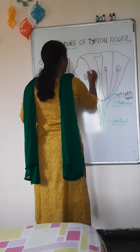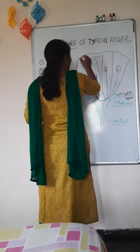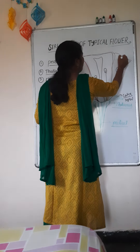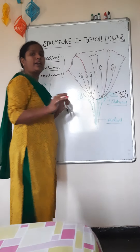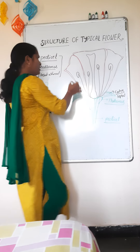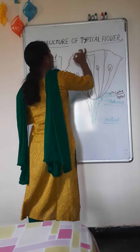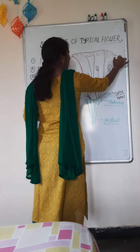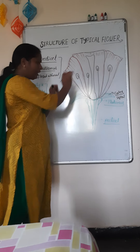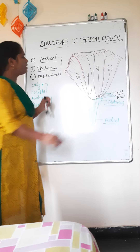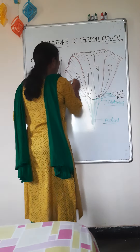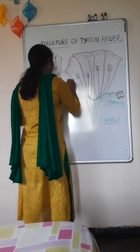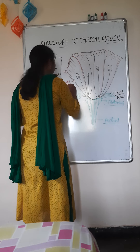The next accessory whorl is the corolla. The corolla is very beautiful and attractive. Its main function is to attract insects for pollination. The second function is protection — to protect the inner whorls in the bud condition. The individual part of the corolla is called the petal.